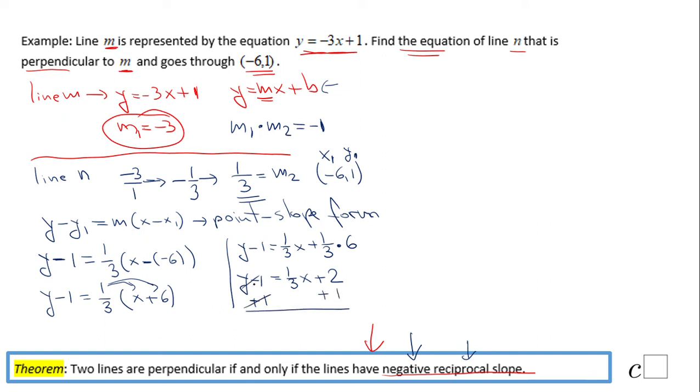We have one more step—add 1 to cancel the negative 1, and we have what is called the slope-intercept form of this equation: y equals 1/3 x plus 3. Sometimes this is good enough, sometimes you're going to need the standard form, and I will show you that in a minute.